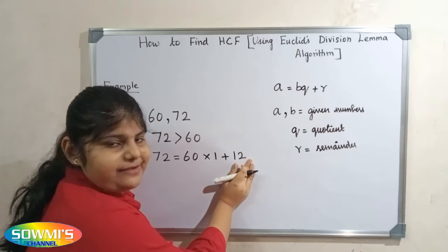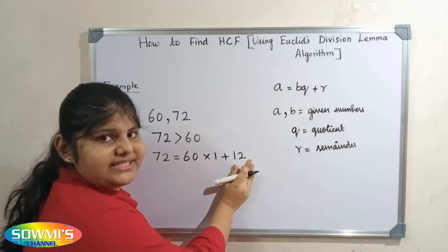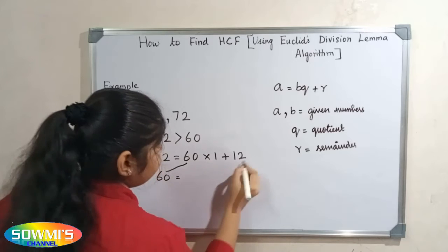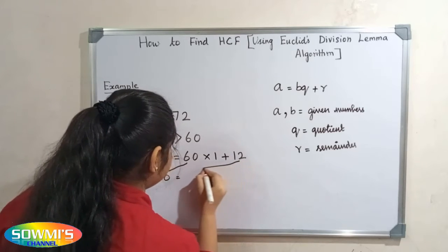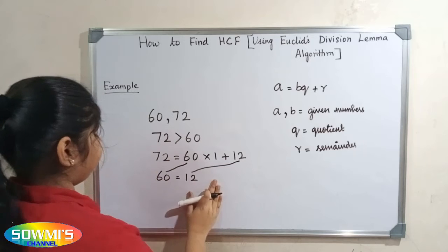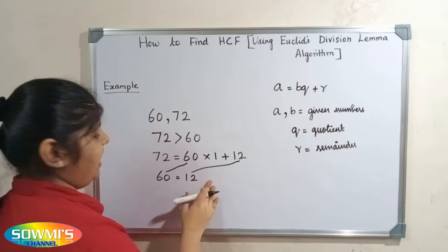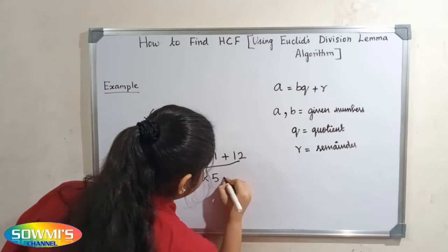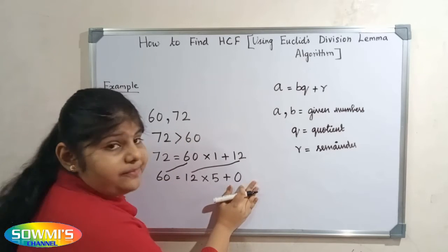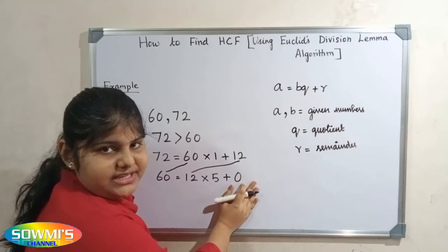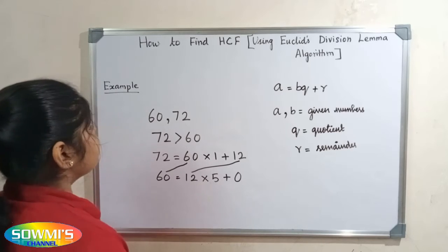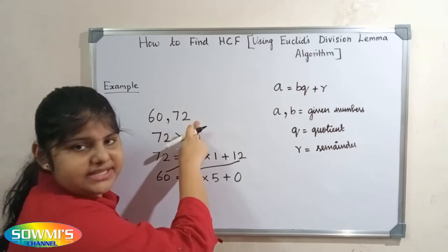The remainder is 12, so we have to repeat the process again. The divisor will become the dividend. Now we have to divide 60 by 12. When we divide 60 by 12, our quotient will be 5 and the remainder will be 0. We stop the process here because the remainder is 0. The divisor is our HCF, so the HCF of 60 and 72 is 12.